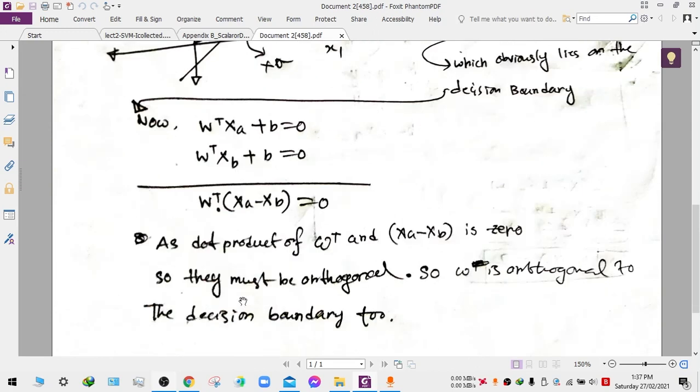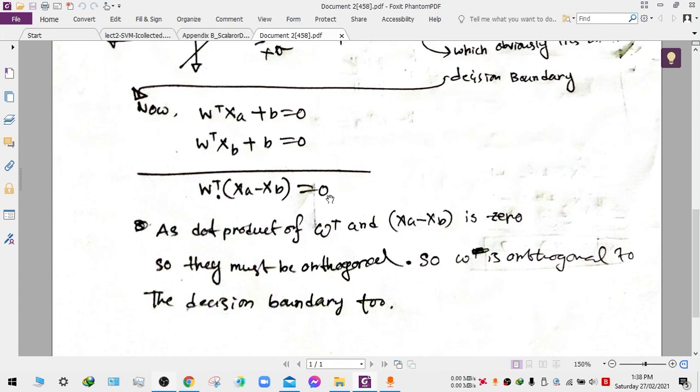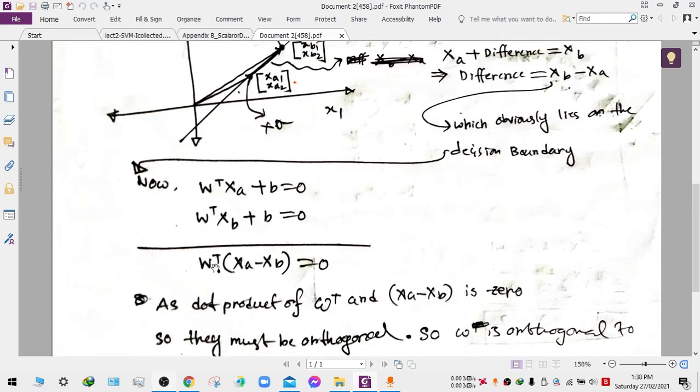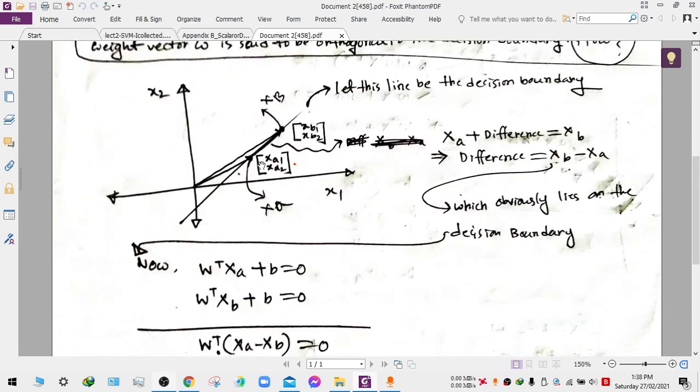As you can see, the transpose of the weight matrix with the difference vector, which is perfectly aligned with the decision boundary, is equal to zero. That means the dot product of these two vectors—the weight vector and the difference vector—is zero, so they must be orthogonal.